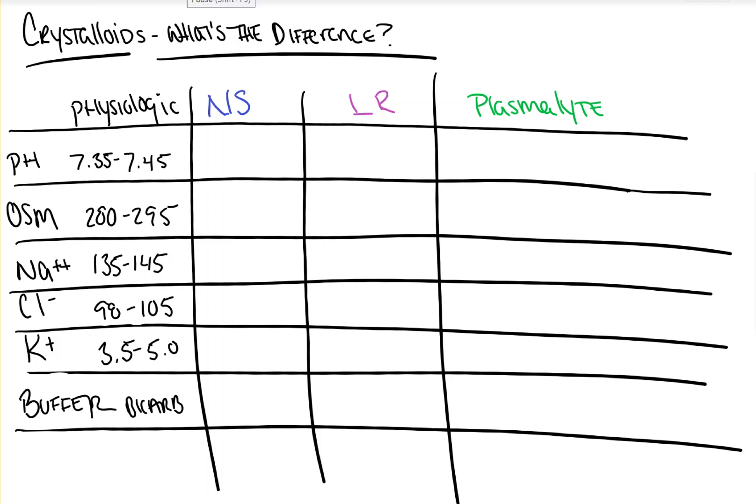Hi everyone. In this video from Count Backwards from 10, we're going to quickly run through the differences in the three types of crystalloid solutions, the most common ones: normal saline, lactated ringers, and plasmalyte.